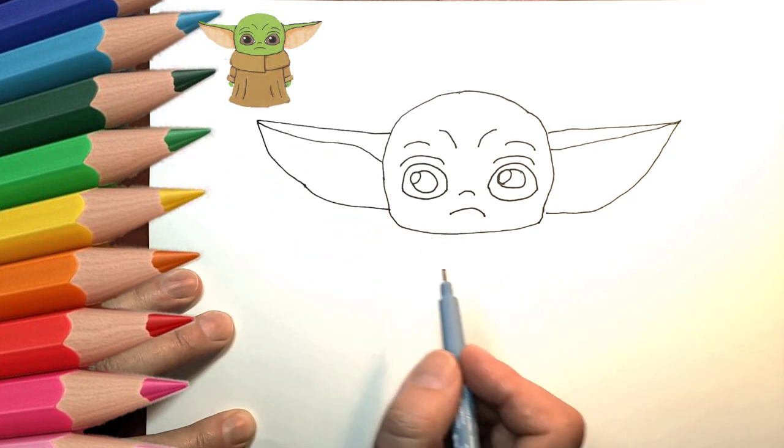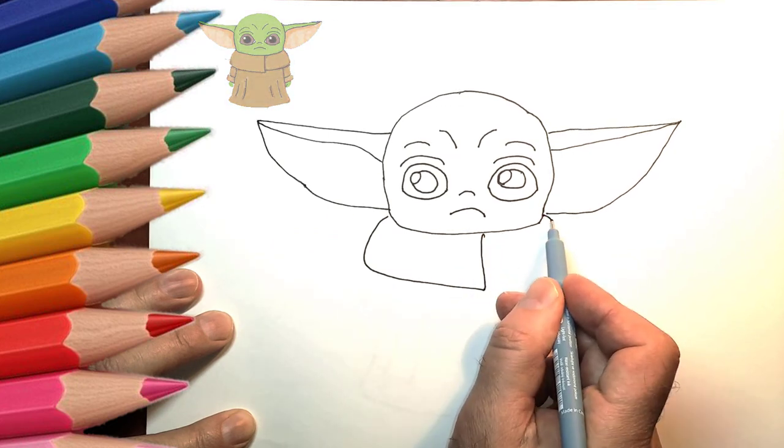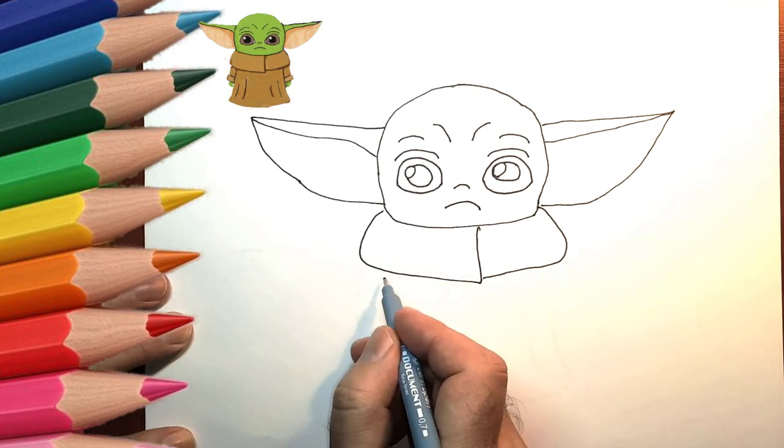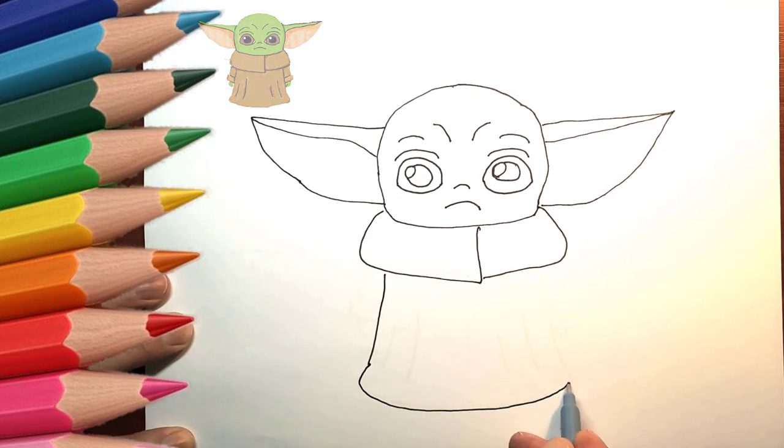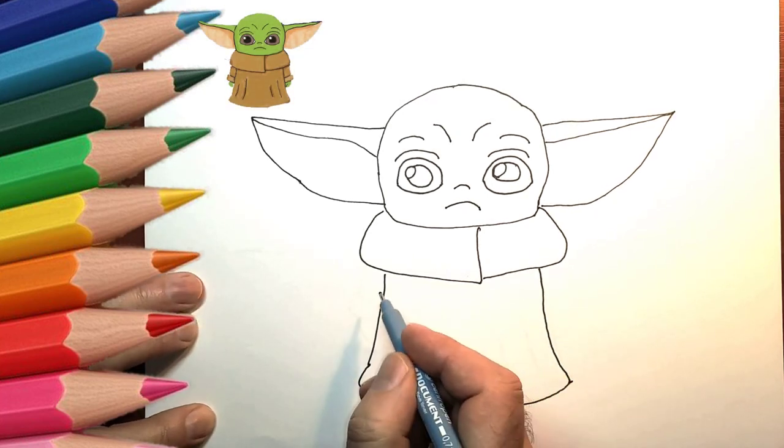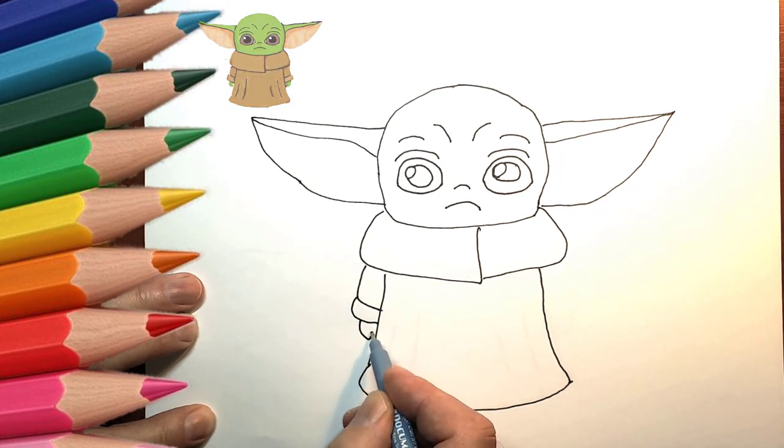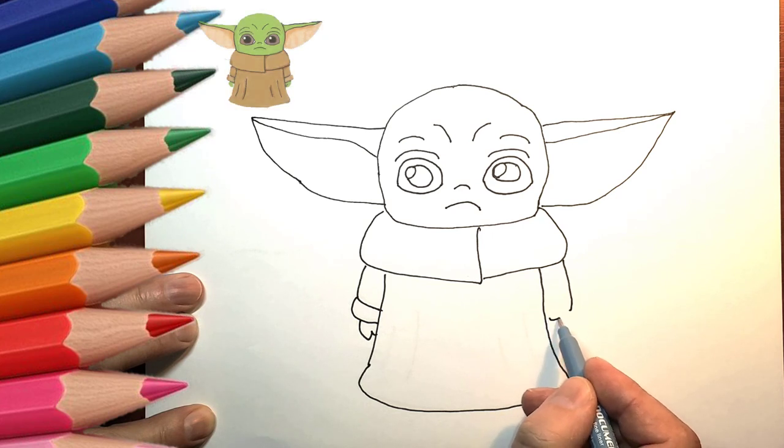Finish the face with a mouth, nose, and brows. Draw a large collar and robe below the head. Add two arms and a horizon line.